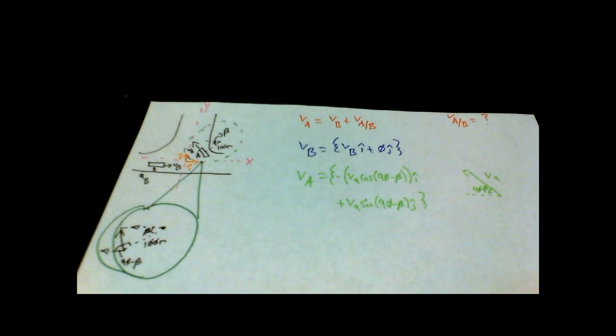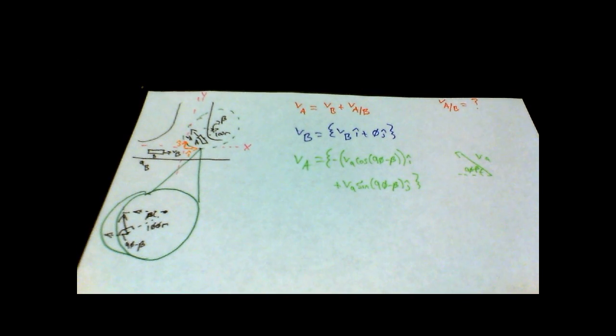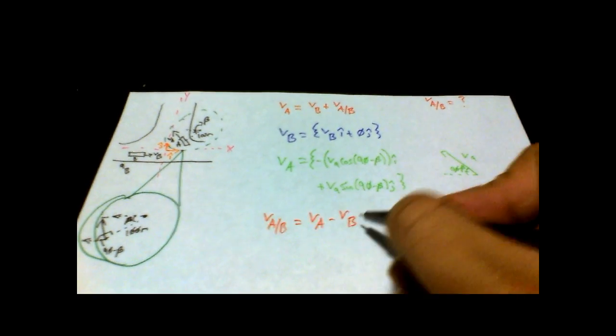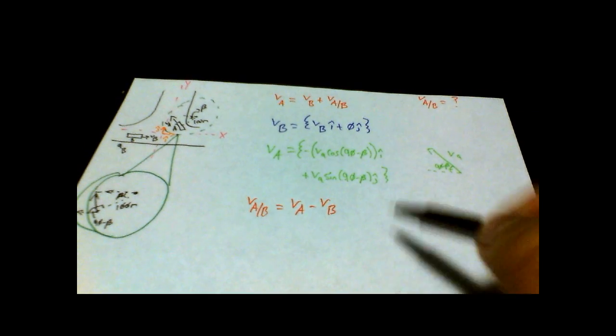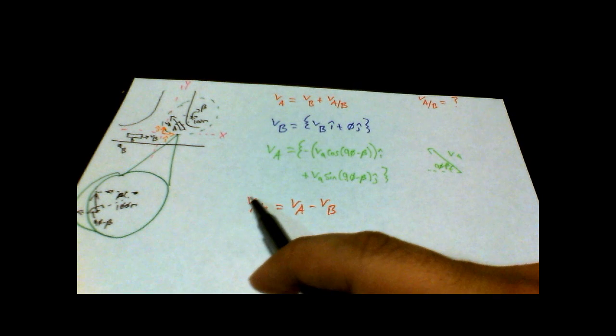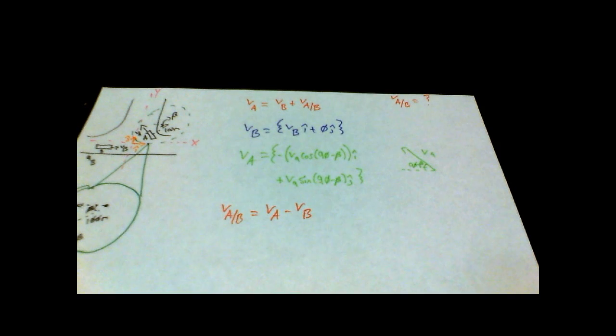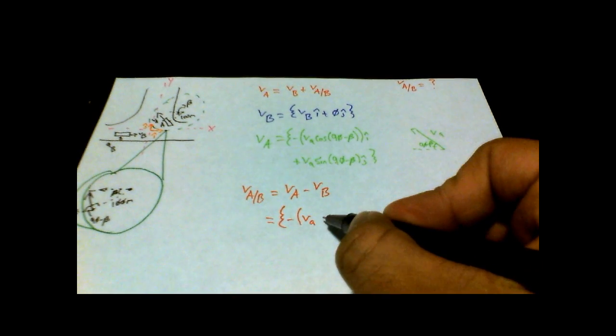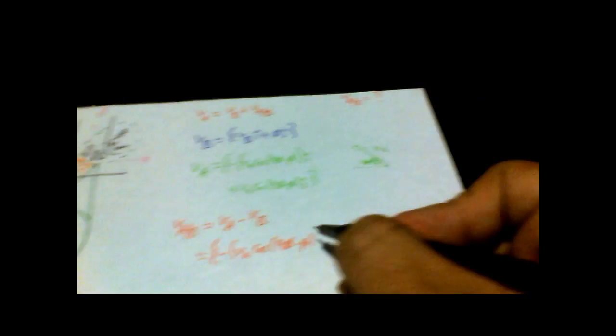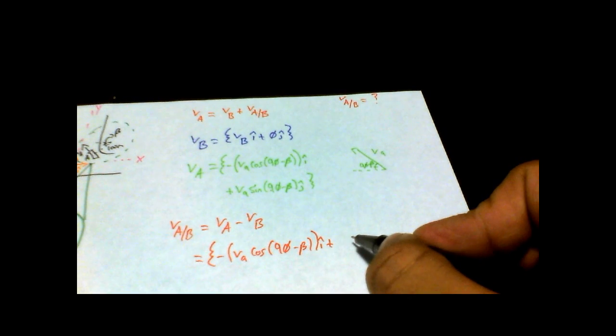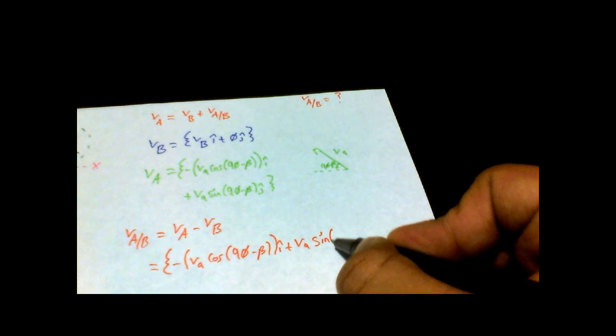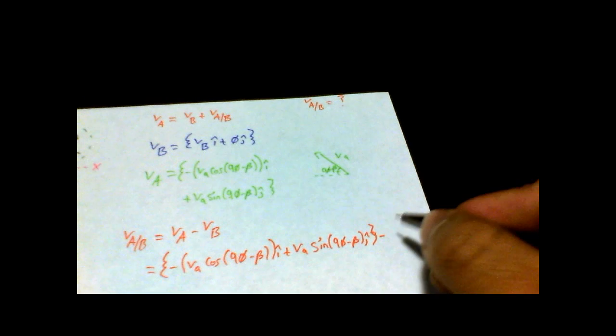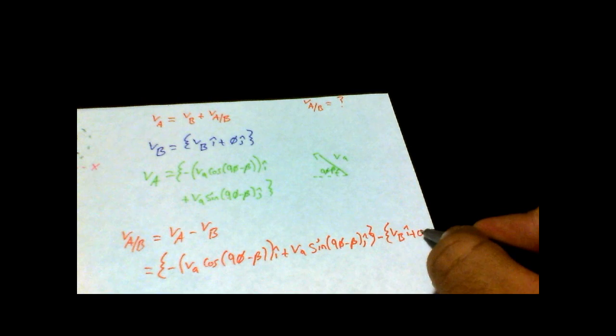So, go back up to our red equation. We are going to isolate for V of A relative to B, which is easy enough to do, which is just V_A minus V_B. Which is also another way to remember it. V relative to A is V_A minus V_B. V of B relative to A is going to be V_B minus V_A. That's another way to remember it as well. So, now we're just going to plug in what we know. Negative V_A cos(90 minus beta) i plus V_A sin(90 minus beta) j minus V_B i plus 0 j.